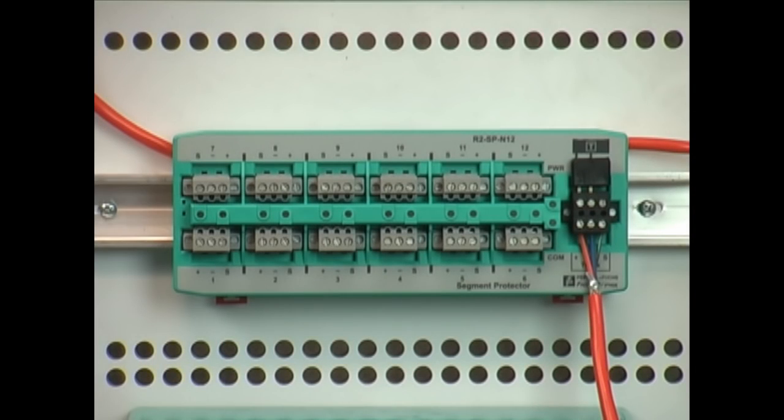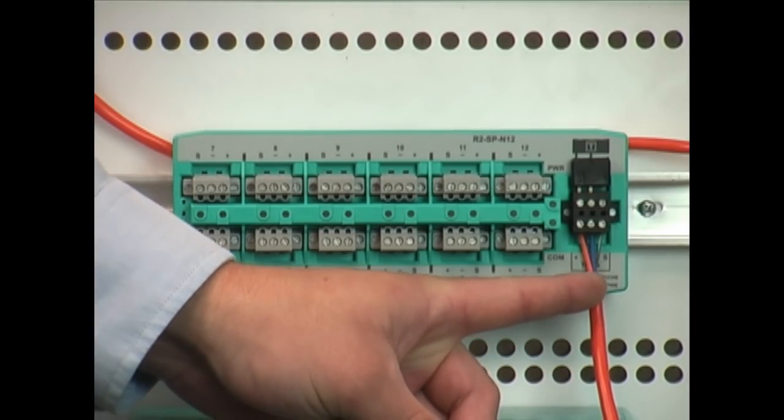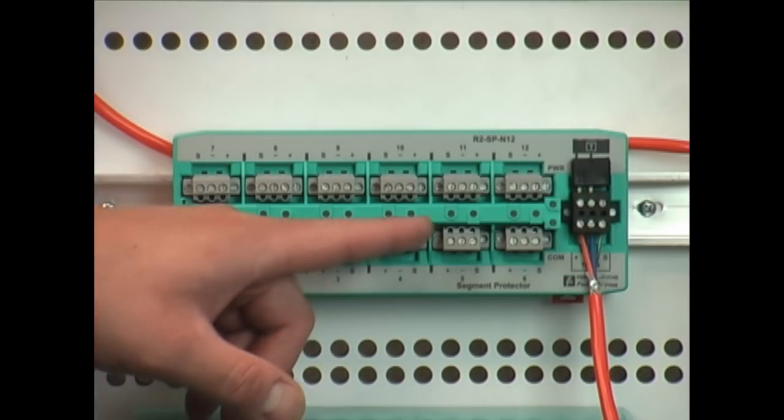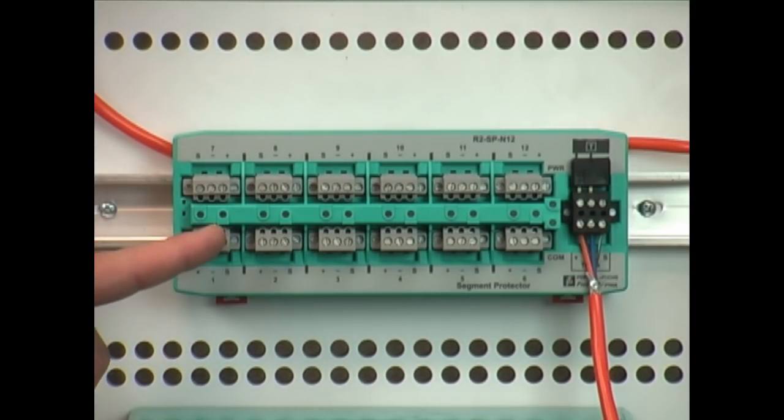The next component for a Foundation Fieldbus segment is going to be some sort of field distribution and for Pepperill & Fuchs we call that a segment protector. This is what takes a trunk in connection from your power supplies and converts that into different spur connections for your individual field devices.